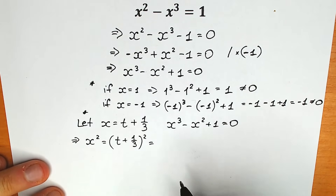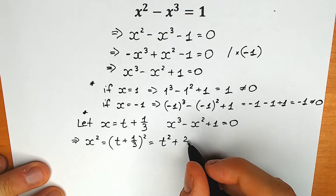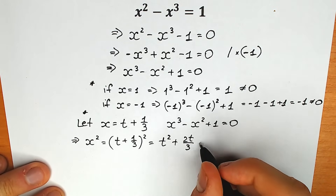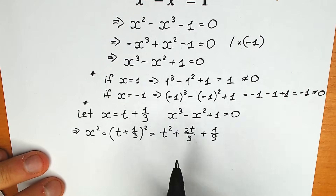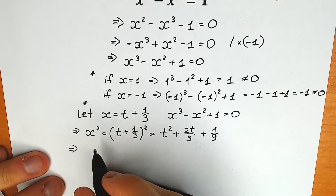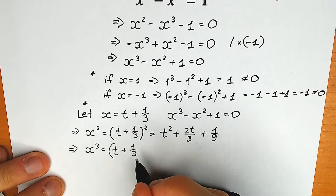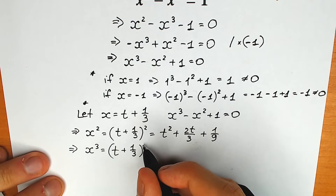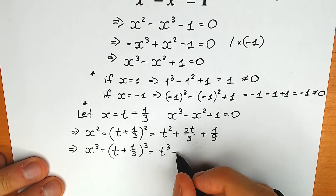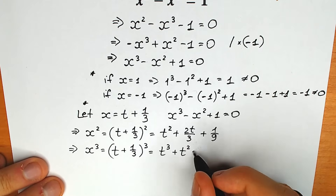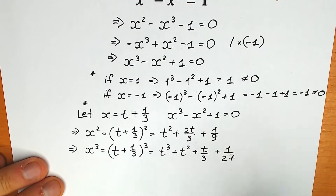According to a basic school formula, x squared equals t squared plus 2t over 3 plus 1 over 9. Then we find x cubed: x cubed equals t plus 1 third raised to the third power. According to the binomial formula, we have t cubed plus t squared plus t over 3 plus 1 over 27.